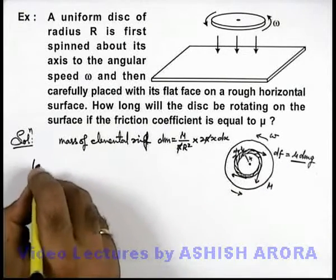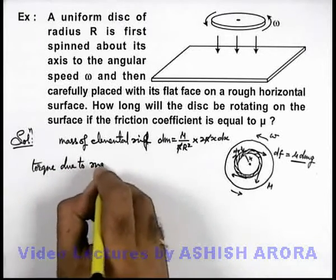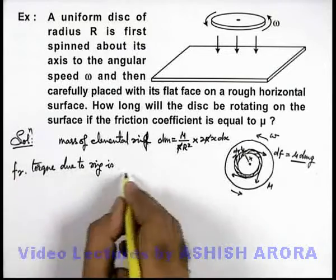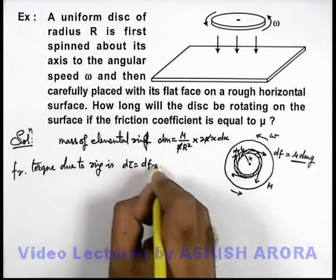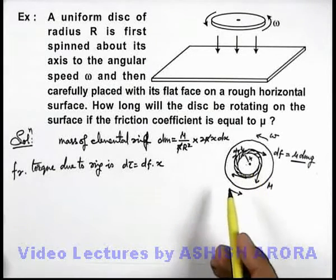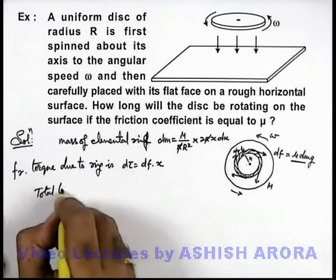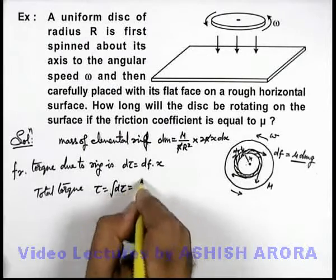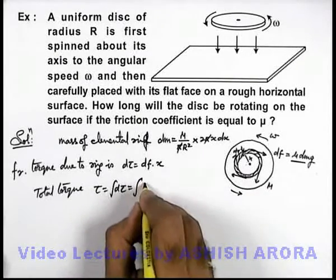If I calculate the torque due to ring, the friction torque due to ring is dτ which can be written as df into x, because this friction is acting at a radius x from the centre of ring. So total torque also we can calculate by integrating this: integration of dτ, that is integration of, I'll substitute the value of df.